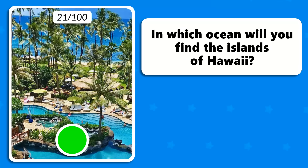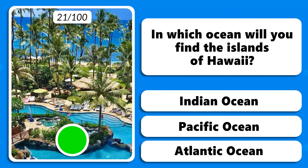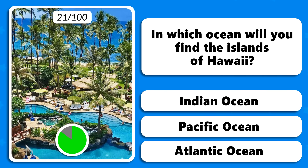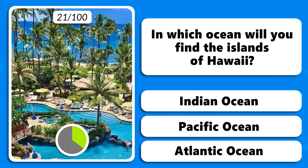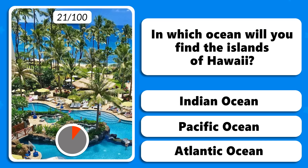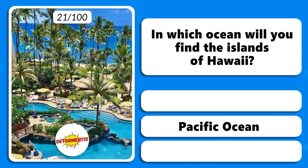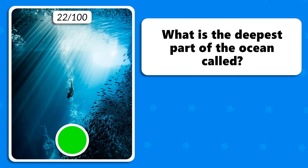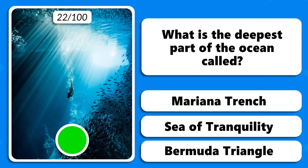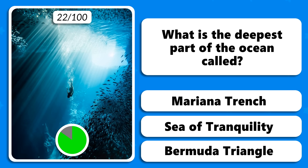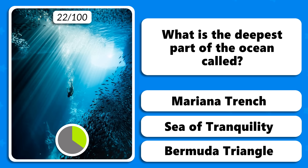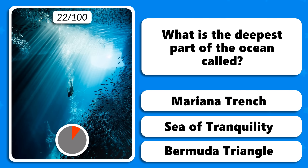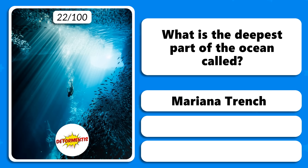In which ocean will you find the islands of Hawaii — the Indian, Pacific or Atlantic Ocean? In the Pacific Ocean. What is the deepest part of the ocean called — the Mariana Trench, Sea of Tranquility or the Bermuda Triangle? The Mariana Trench.